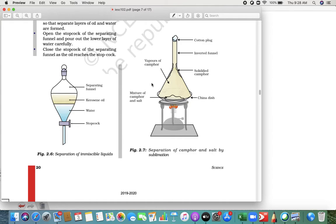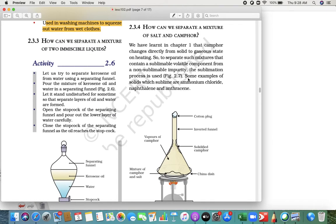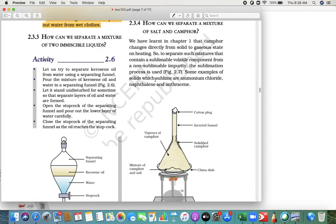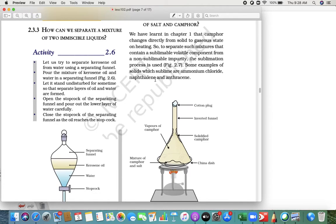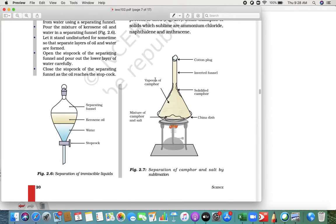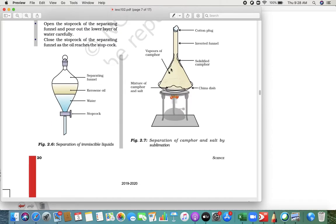This is how the camphor gets attached at the top. Camphor changes directly from solid to gas on heating. To separate such mixtures containing a sublimation volatile component and a non-sublimation impurity like salt, once you can remove that funnel, you can get it done.